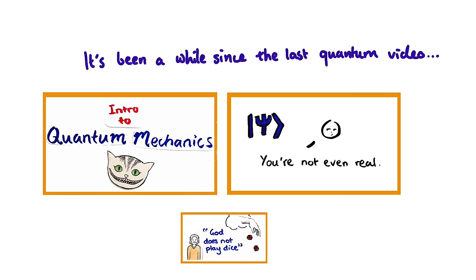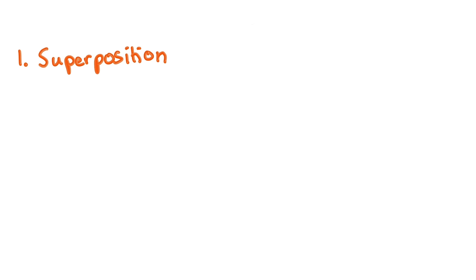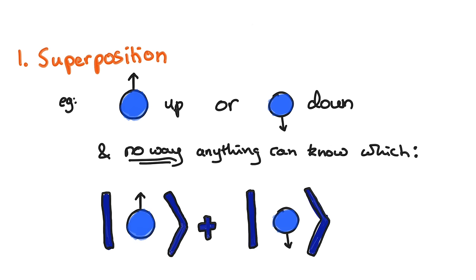There are only two quantum rules that we need to give us entanglement. The first is the superposition rule. It says that if there are several options for an object and there's no way that anything could know what option the object is really doing, then it is in a superposition of doing all of them. Now, importantly, this is very different from saying it is doing one or the other, but we don't know which.